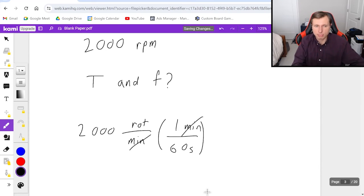So really, if I just divide my answer by 60, that's going to give me the units I want. So 33.3 rotations per second.